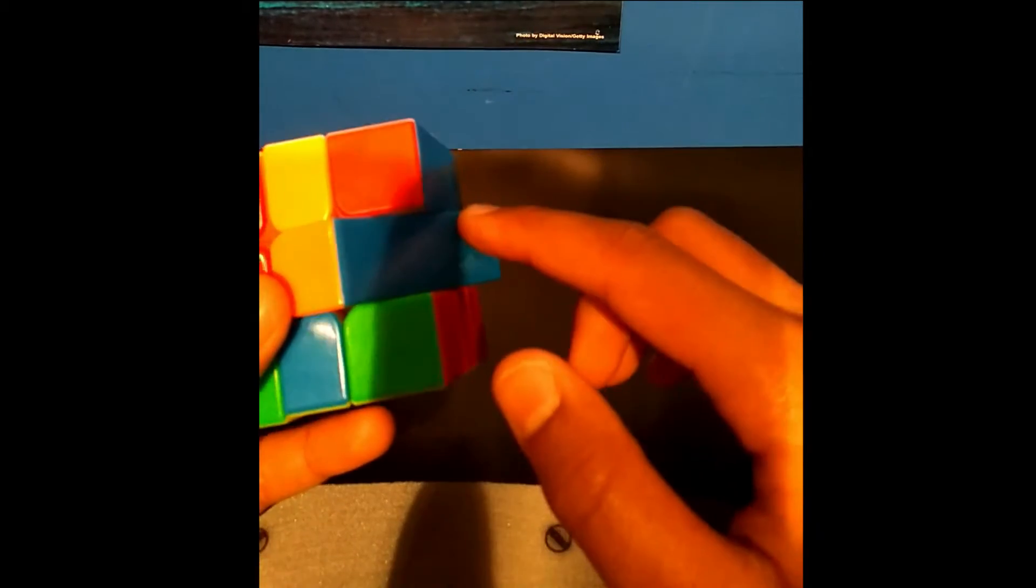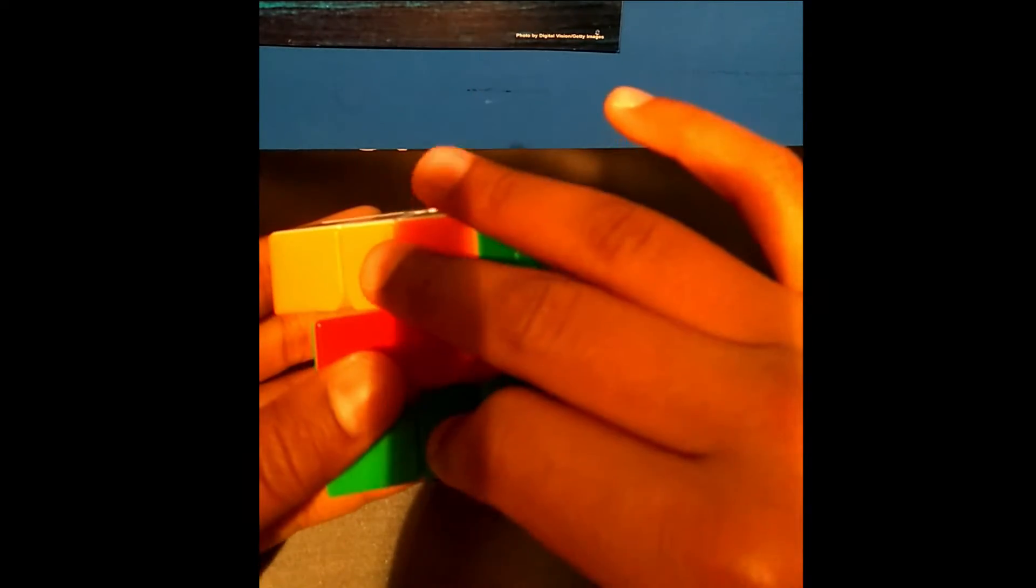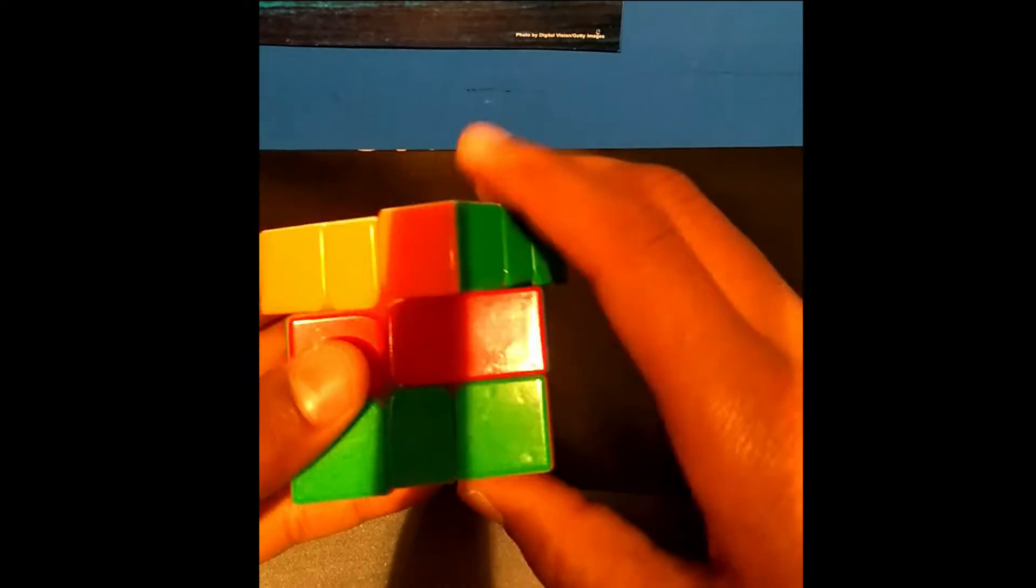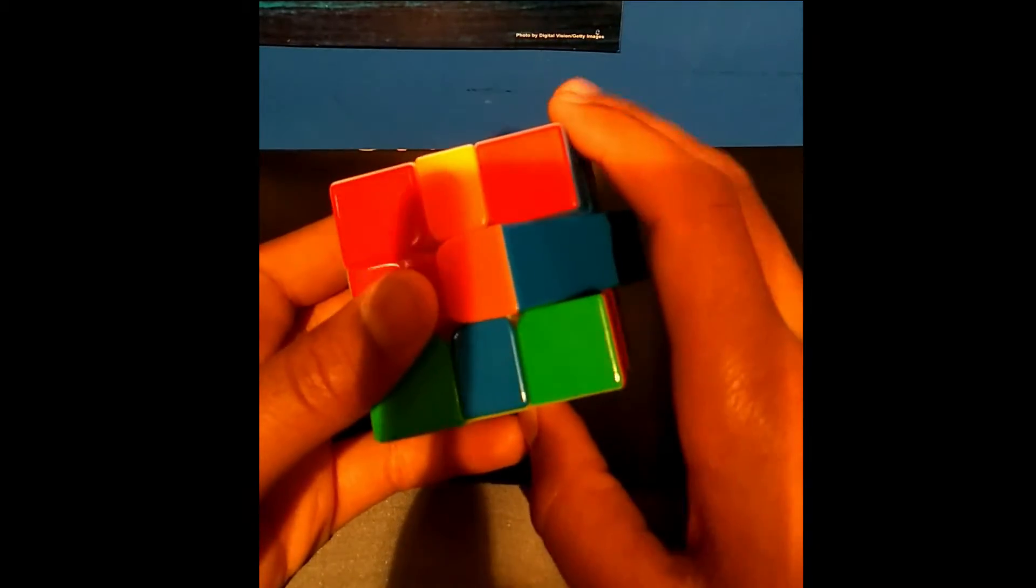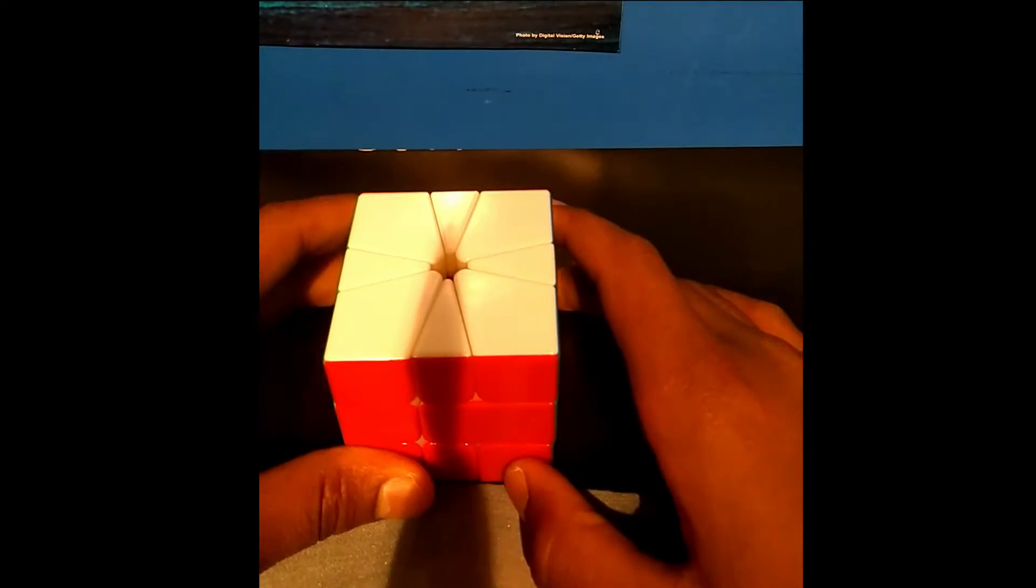Then I get to this situation and I see two opposite swaps in the middle layer. What I should do in this situation is do this out which solves the swap in the middle layer, but what I decided to do, which is really bad, is to just do U2 and do CP, and then flip it on the bottom. I never do that, I don't know why I decided to do it in the solve, but it was a 14 so I guess it was worth it.